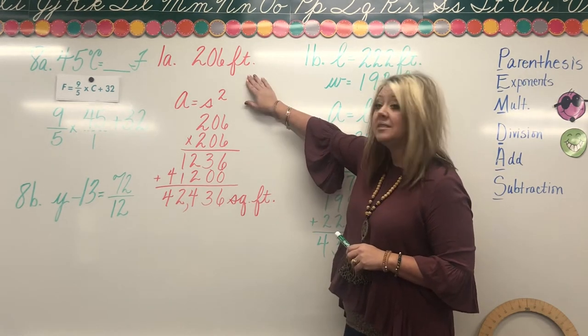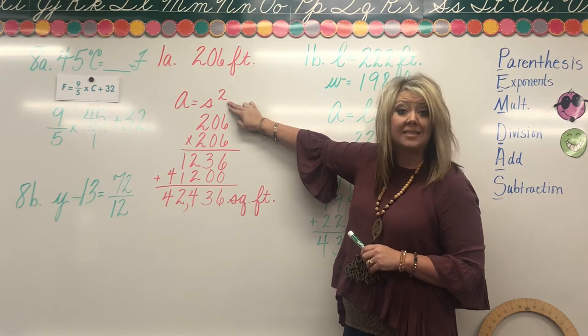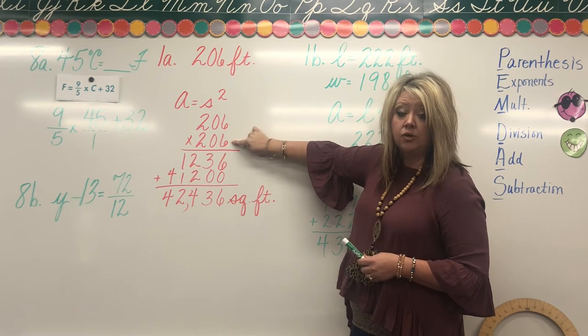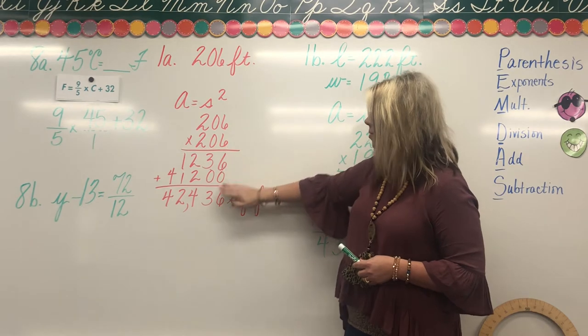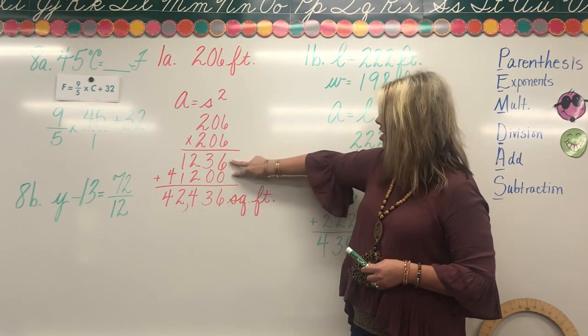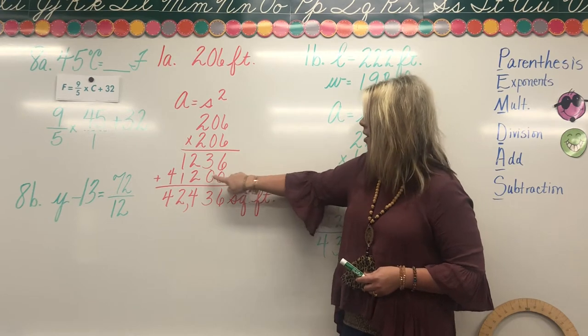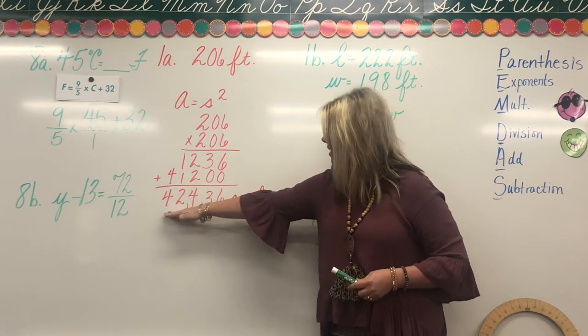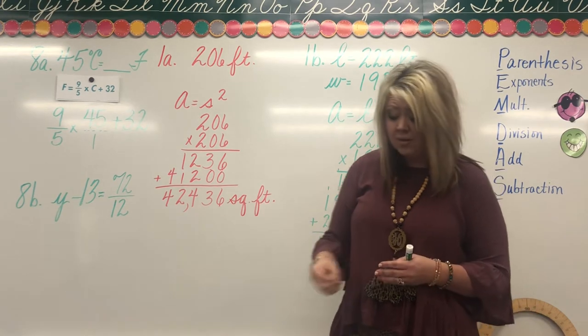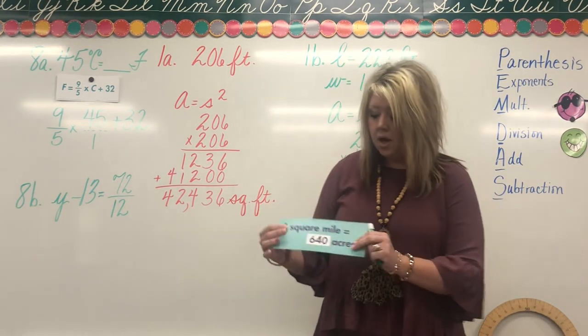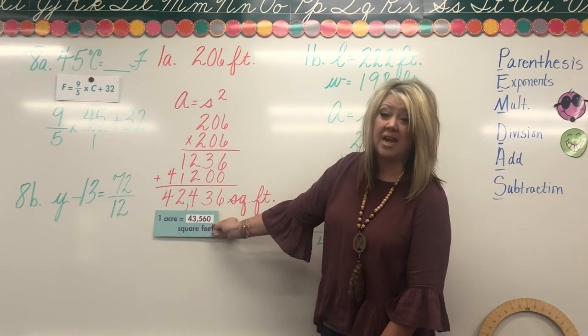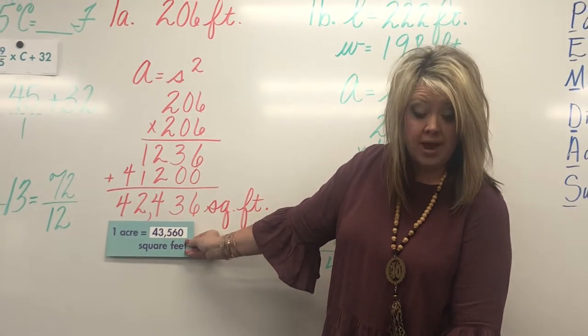Here in 1a we have 206 feet. We're using the formula that you already know: A equals S times S, or A equals S squared. So that simply means multiplying a number by itself. 206 times 206 equals the product of 42,436 square feet. And I just eliminated the row of zeros here. You can do that if you add two zeros to the second partial product. But you should get this answer: 42,436 square feet. And then you have to mark, is that greater than an acre or less than an acre? Well remember, one acre equals 43,560 square feet. So of course that number is smaller, so that would be no as your final answer there.